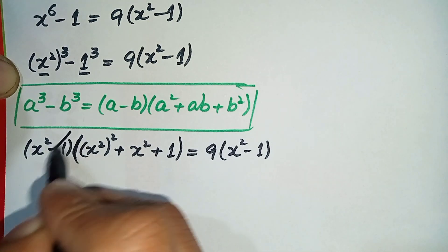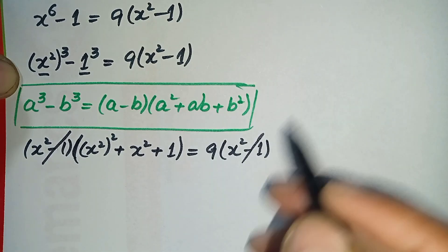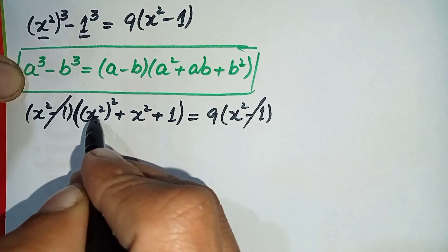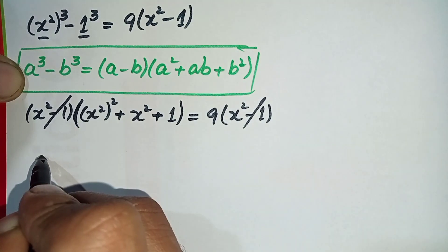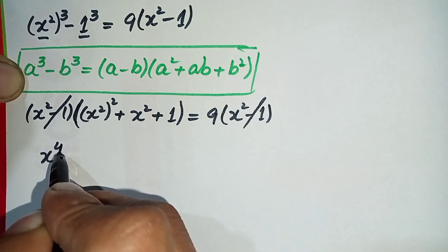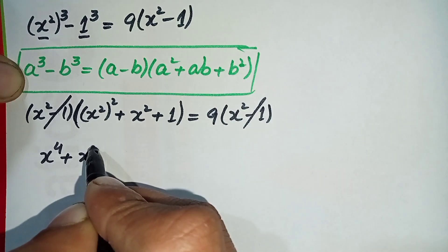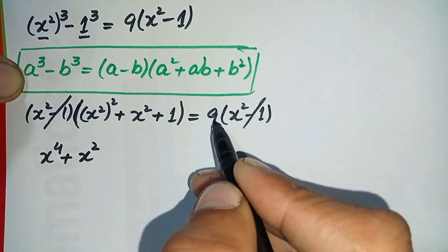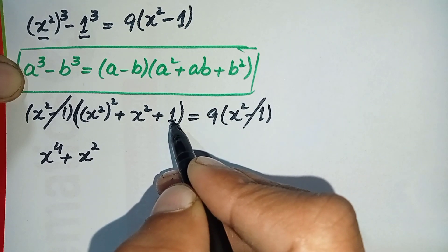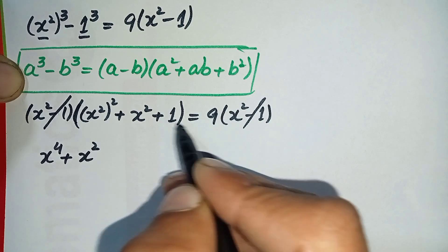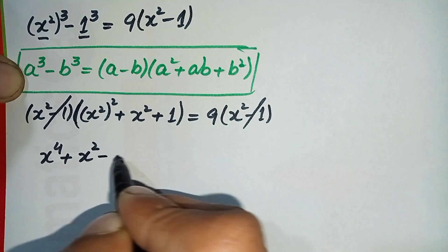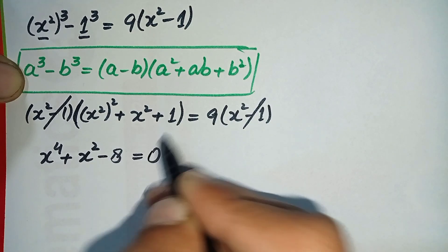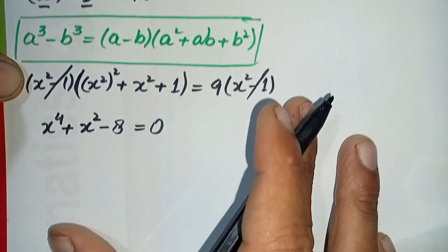Now, x squared minus 1 is common on both sides, so we cancel it out. The equation becomes x to the power 4 plus x squared plus 1 minus 9 equals 0, and since 1 minus 9 is minus 8, we get x to the power 4 plus x squared minus 8 equals 0.